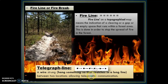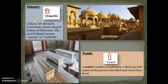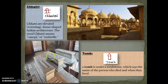Now we will know about some important monuments and buildings. The first symbol is Chhatri — I have drawn the symbol of Chhatri in red. Chhatri are elevated dome-shaped Indian architecture; the word means canopy or umbrella. Tomb is also red in color — a tomb is under a tombstone which says the name of the person who died and when they lived.